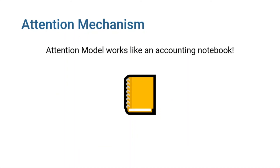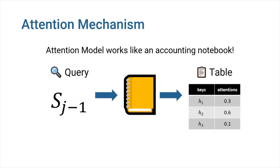So, to put it simply, attention model works like an accounting notebook. For every query which in our example was the last hidden state of the decoder, the attention gives us a table which shows us how much attention we owe to each of the keys, which in our case were the encoder hidden states.